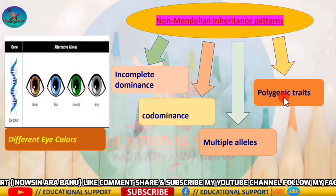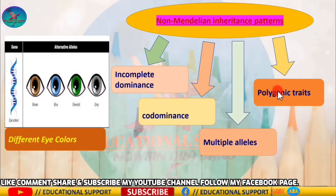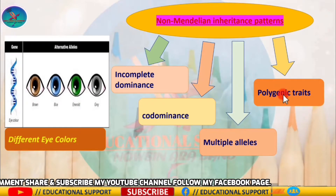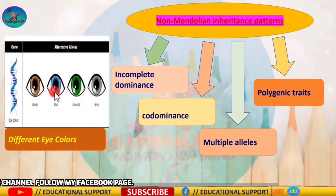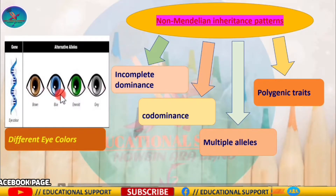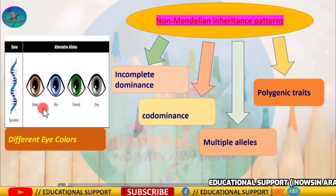In polygenic traits, the phenotype is determined by many genes. Skin color, eye color, height, weight, and hair color of humans are polygenic traits. Four different eye colors of humans are shown in this figure.